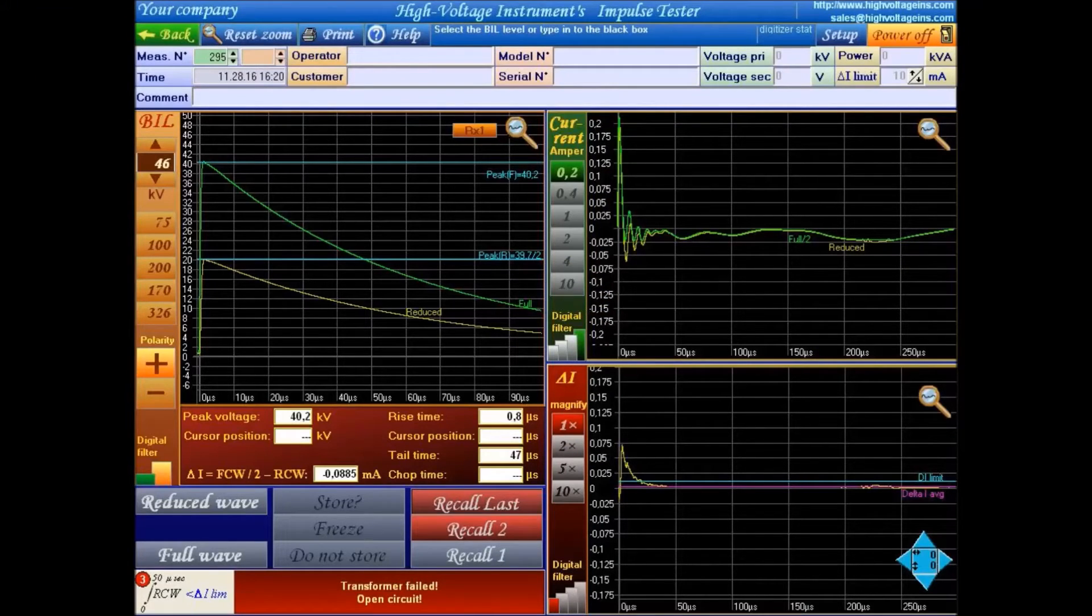On the digital recorder we could see both waveforms, the voltage and the current wave, even the difference of the two current waves.